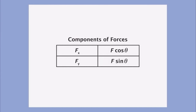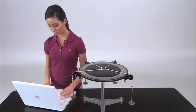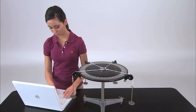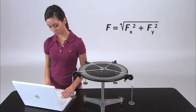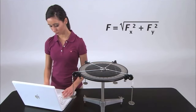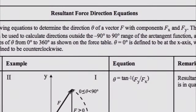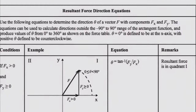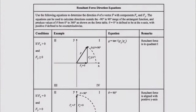Next, calculate and record the magnitudes of the x and y components of the three applied forces. Add the x components of the three applied forces to find the x component of the resultant force. Add the y components of the three applied forces to find the y component of the resultant force. Record the values. From the x and y components of the resultant force, use the Pythagorean theorem to calculate the magnitude of the resultant force. Also, from the x and y components, determine the direction of the resultant force. Because the resultant force may not lie in the first quadrant, you must use the appropriate equation from the resultant force direction equations table.